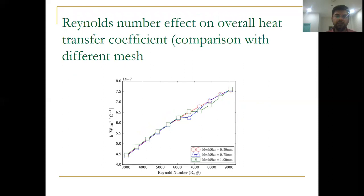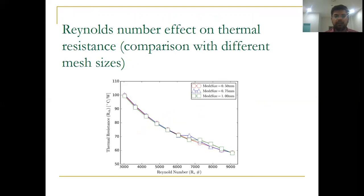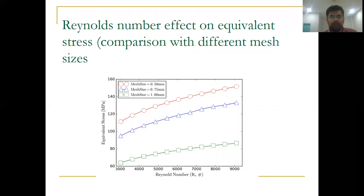Similarly, the Reynolds number effect on the average heat transfer coefficient. This is the graph. When we increase the Reynolds numbers, the thermal resistance also decreases with different mesh sizes.